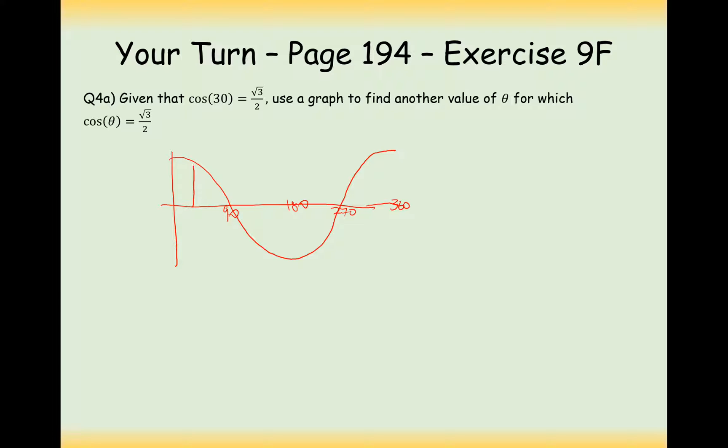Now, cos of 30 is going to be root 3 over 2. So that's when you plug 30 degrees into your cos graph, you're going to get root 3 over 2. So when else are we going to get root 3 over 2? Well, let's look across the graph and downwards here. Now we're going to have to work out what this angle here is, and we'll have to use a bit of symmetry on this curve here.